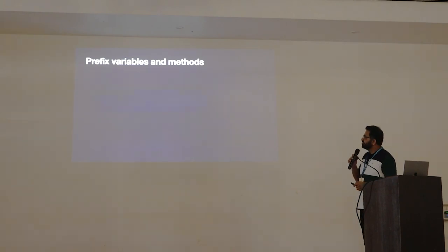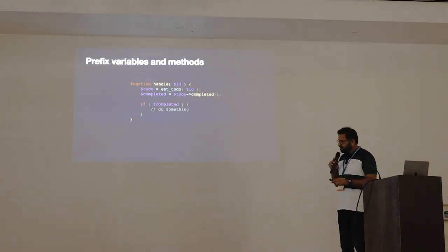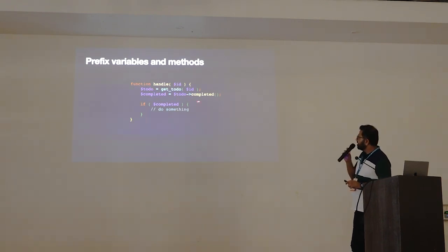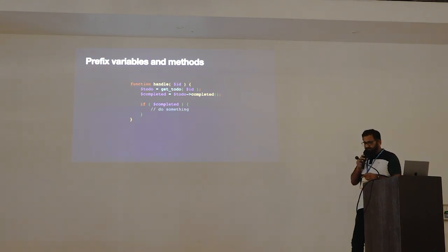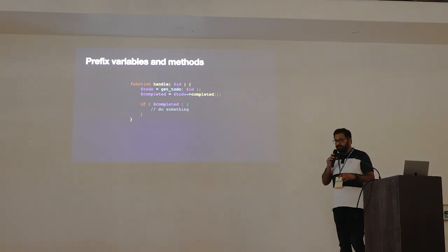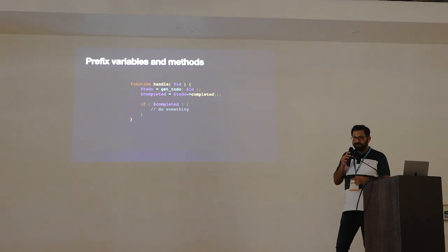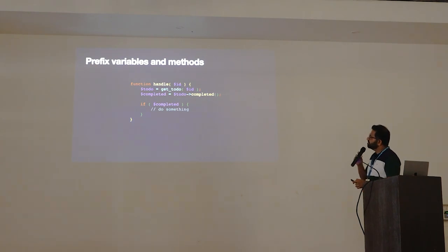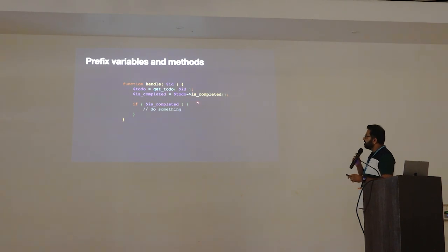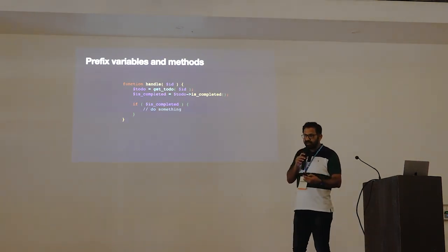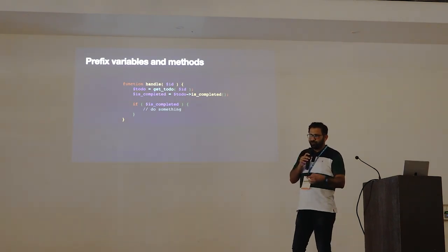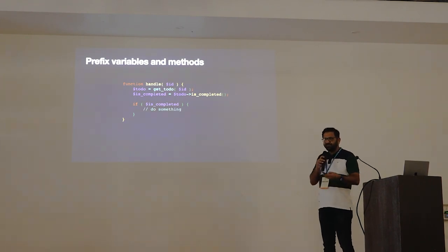Prefix your variables and methods. Here is a simple function fetching a to-do from the database and calling a method 'completed' on the to-do object. Just by reading this we don't know whether 'completed' is marking the to-do as completed or determining whether it has been completed. It can be both — it may be changing data in the database or returning something. If we add the prefix 'is', writing 'todo->isCompleted()', now just by reading this you know it is fetching from the database whether this to-do is completed or not, and it will return a boolean — true or false.